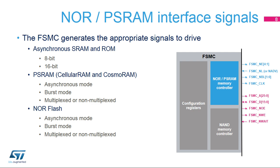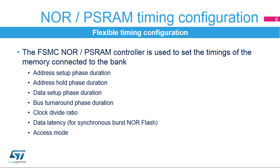The FSMC outputs a unique chip select signal to each bank and performs only one access at a time to an external device. The external memories share address, data, and control signals. The NOR PSRAM controller allows configuration of various timing parameters including: address setup phase, duration of the first access phase, address hold phase, duration of the middle phase of the access cycle, data setup phase, bus turnaround phase duration, clock divide ratio — the number of AHB clock cycles (HCLK) within one memory clock cycle (CLK) — data latency, number of clock cycles issued to memory before the first data transfer, and access mode.